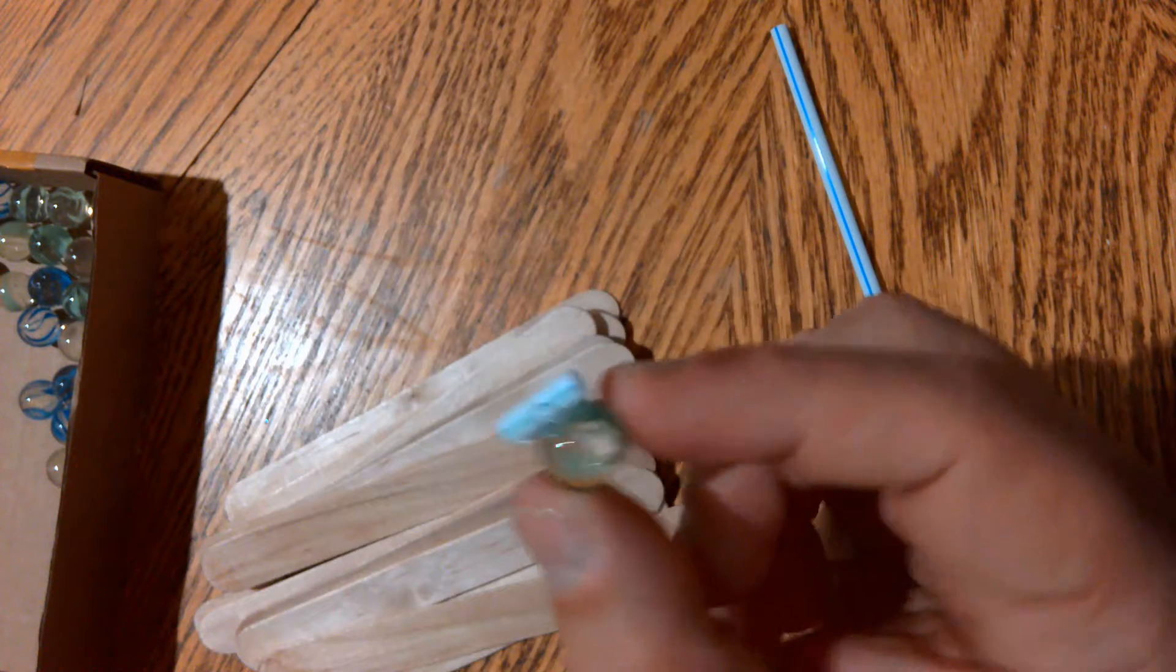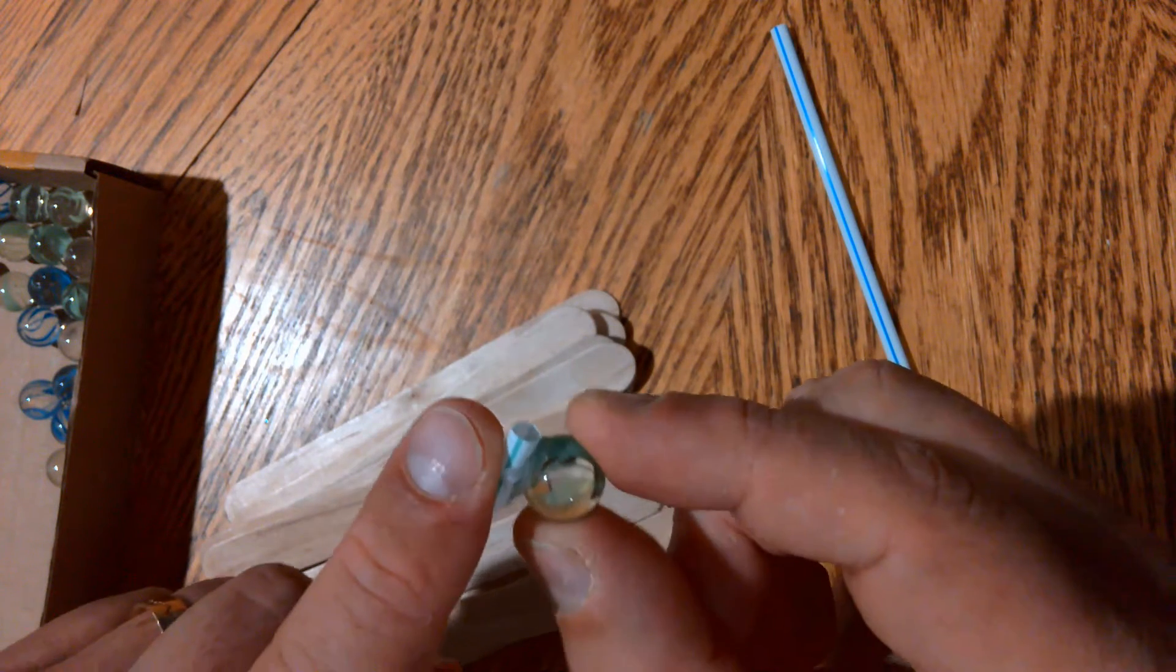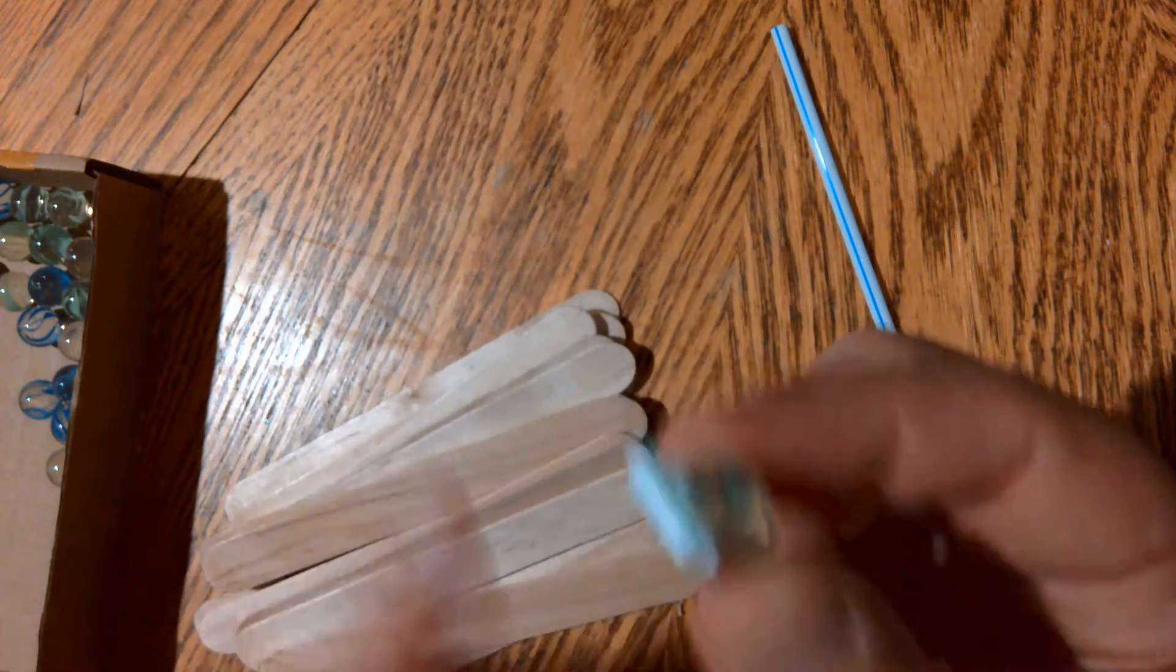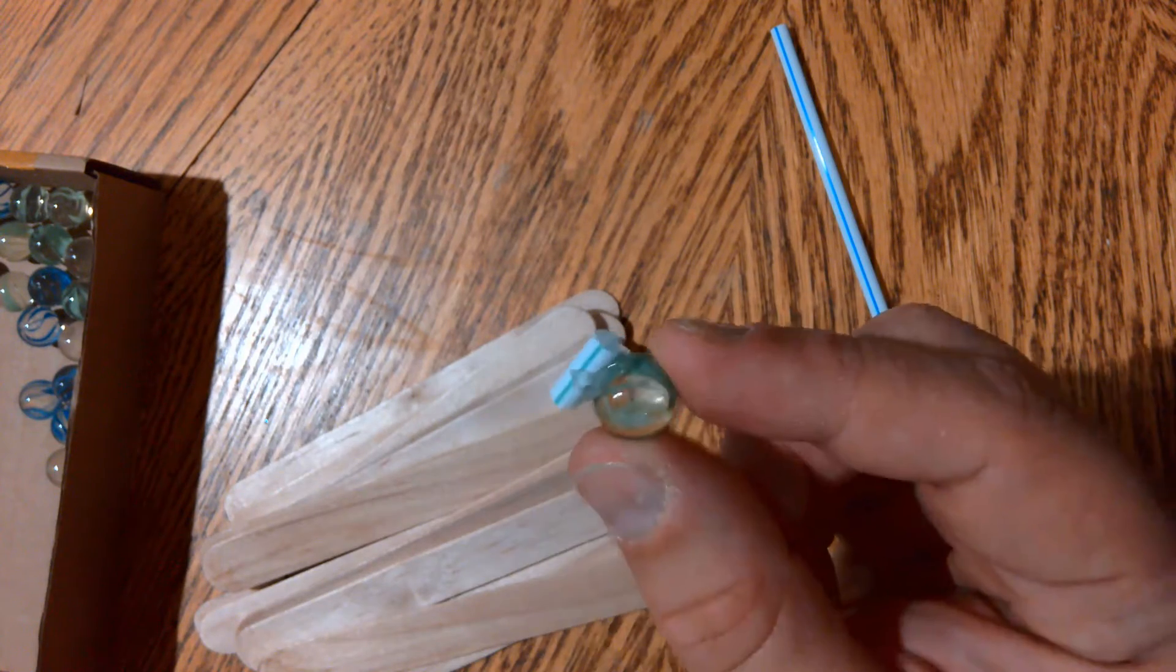If you need to make these yourselves, simply attach the hot glue to the straw, add the marble, and then cut them off.